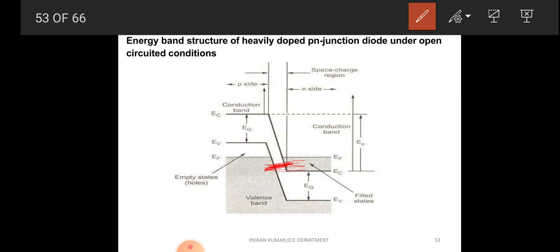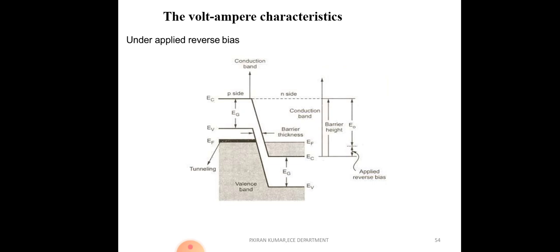In the valence band there are holes, and in the conduction band there are electrons. In the N region, due to the Fermi level being in the conduction band, there are free electrons. In the P region valence band there are holes. Due to heavy doping, the width is very narrow, so tunneling occurs. That is why we call this device a tunnel diode. Now, what happens when you apply bias voltage?